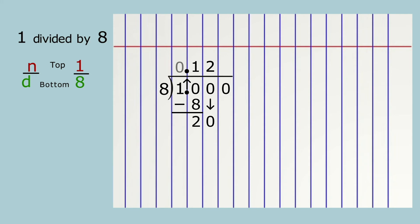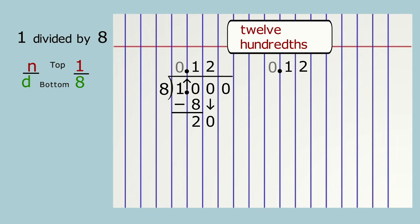Now we have two decimal places — that's enough to estimate the percentage. You can read this decimal number as zero point twelve or point twelve, but the value is more obvious when you say twelve hundredths. To describe the fraction with a horizontal bar, say twelve over one hundred.